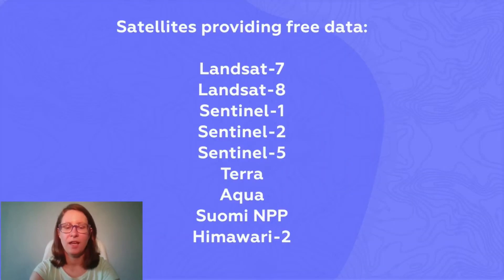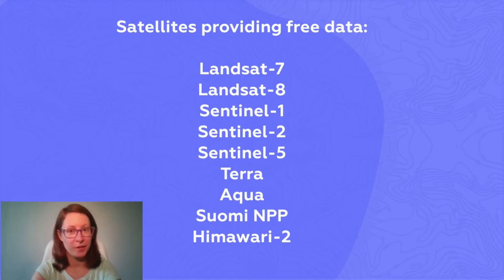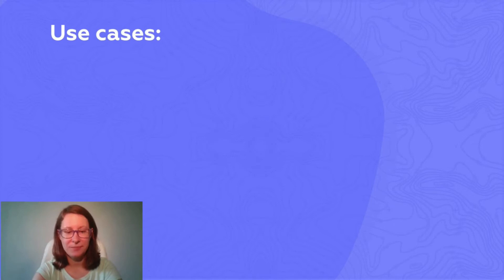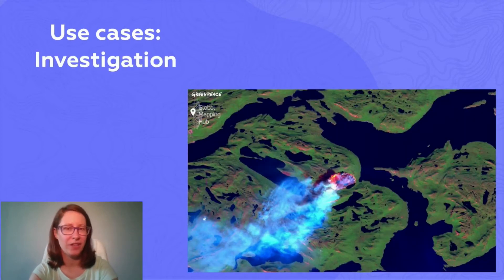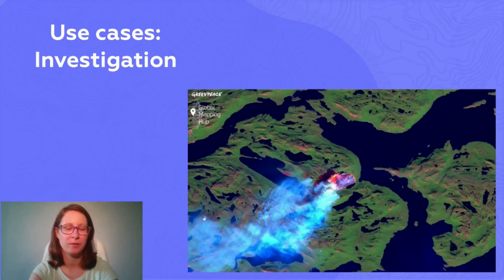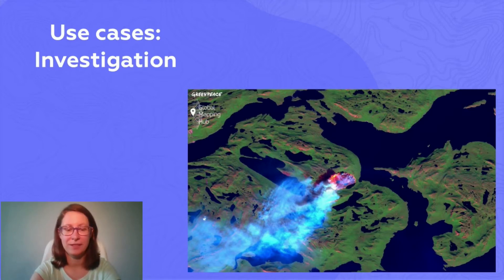A part of this data is open and a part of it is free. We can use it to find out about events if their location is hard or impossible to access quickly — like wildfires in Greenland.